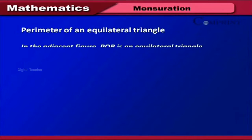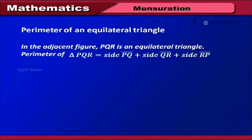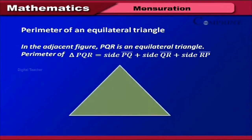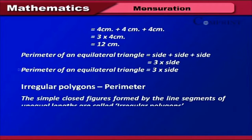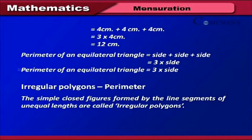Perimeter of an equilateral triangle. In the adjacent figure, PQR is an equilateral triangle. The perimeter of triangle PQR equals PQ + QR + RP, which equals 4 cm + 4 cm + 4 cm, which equals 3 × 4 cm = 12 cm. Therefore, the perimeter of an equilateral triangle equals side + side + side = 3 × side.